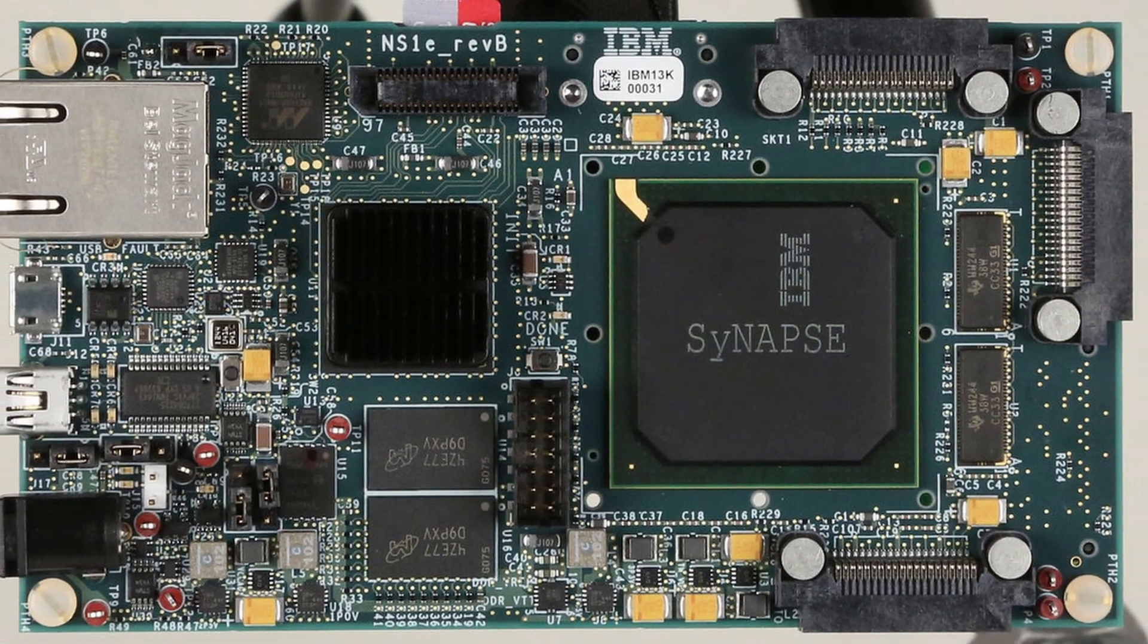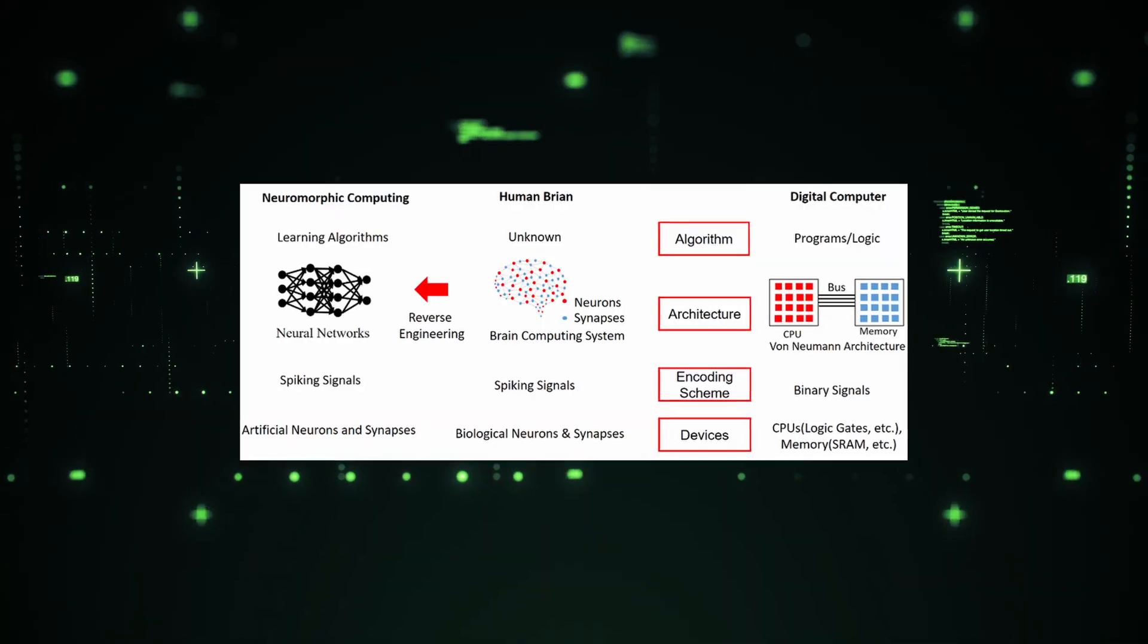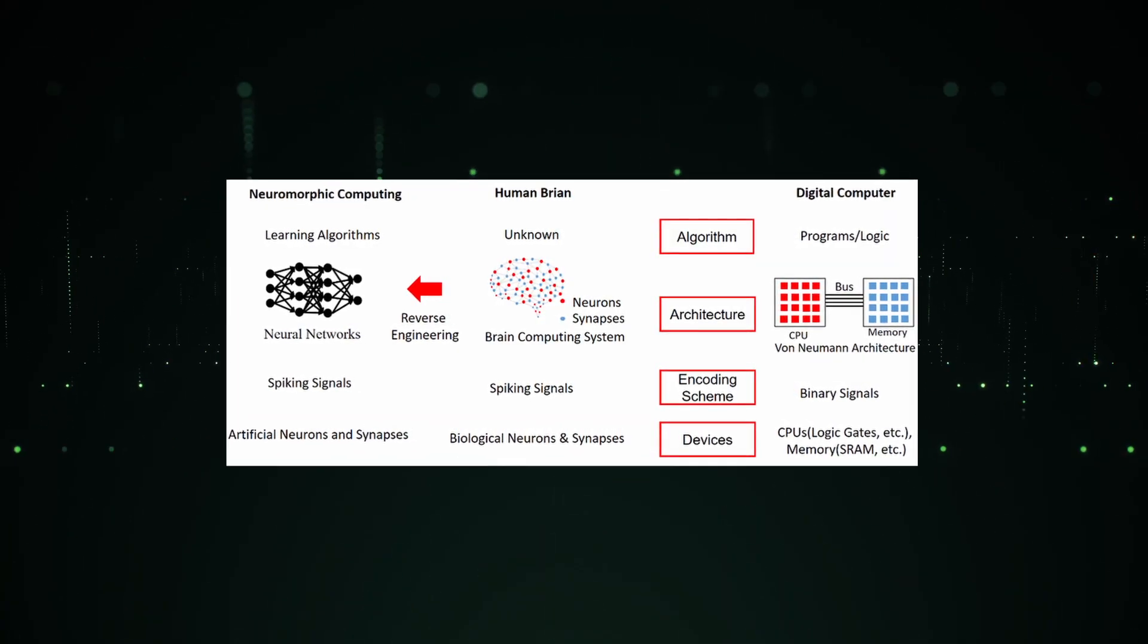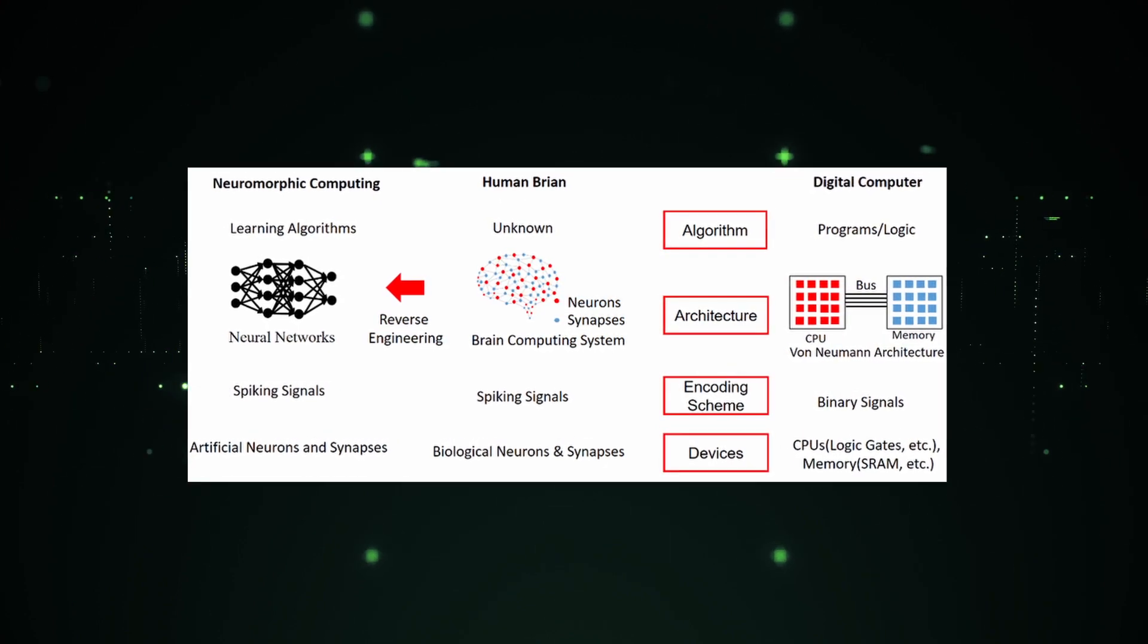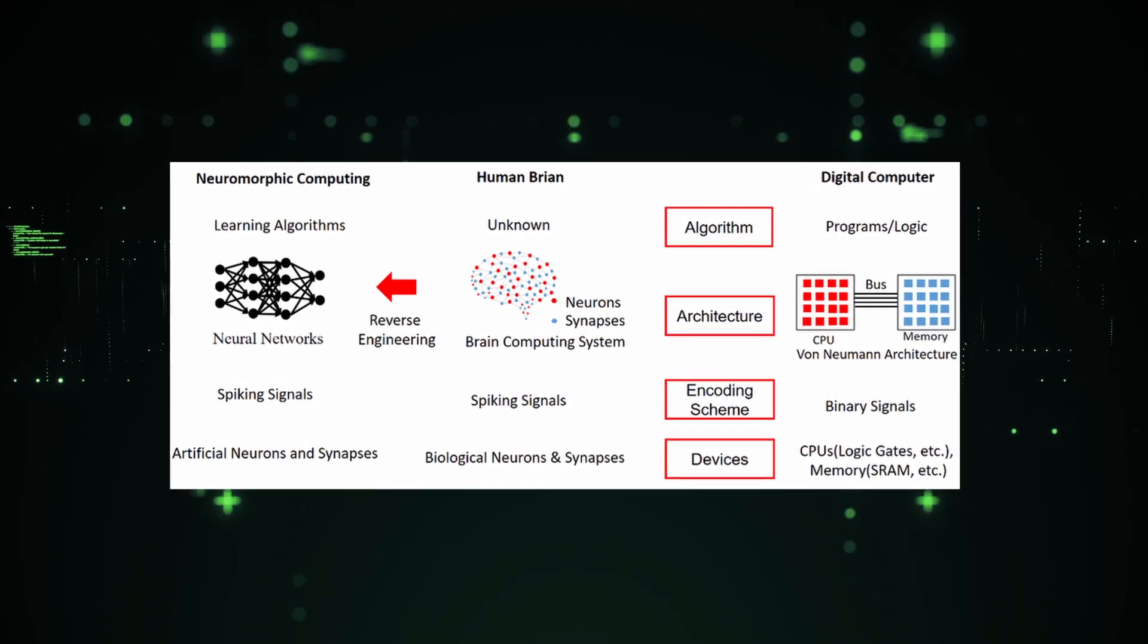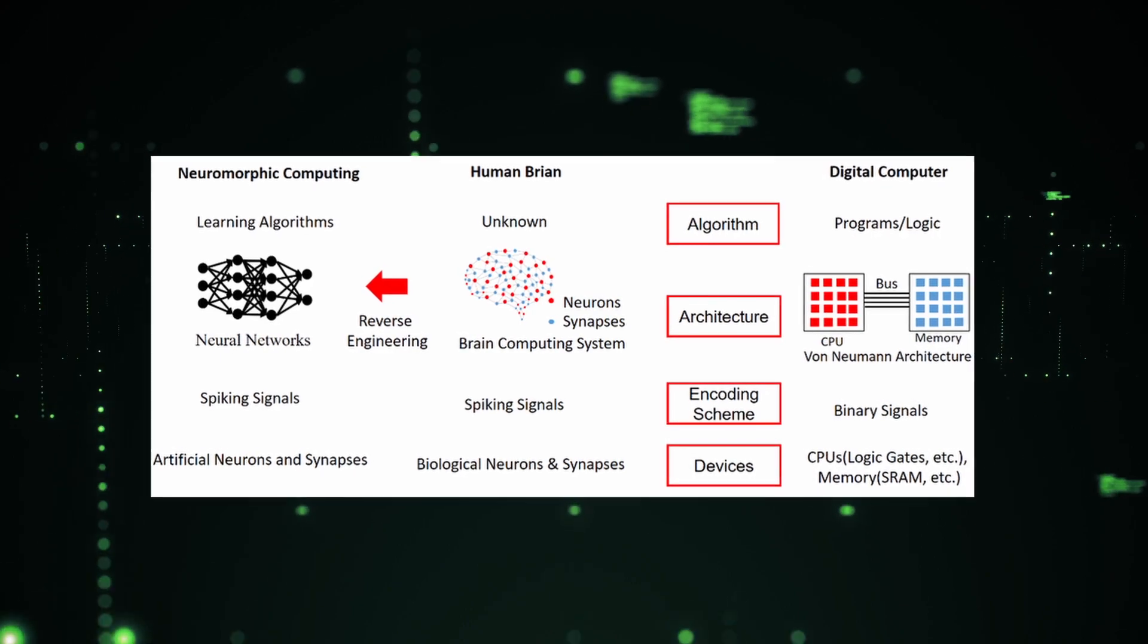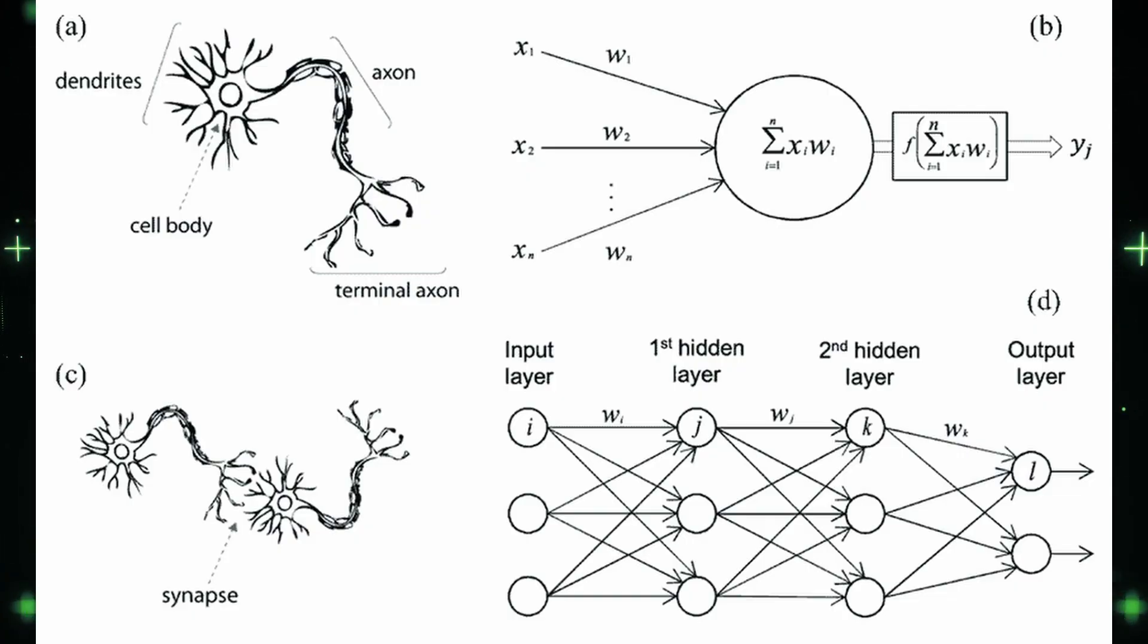Neuromorphic chips are a new type of technology that mimic the way the human brain works. They have artificial neurons and synapses that can process information quickly and efficiently. This means that computers using these chips will be smarter and use less energy. They also have the ability to learn quickly.